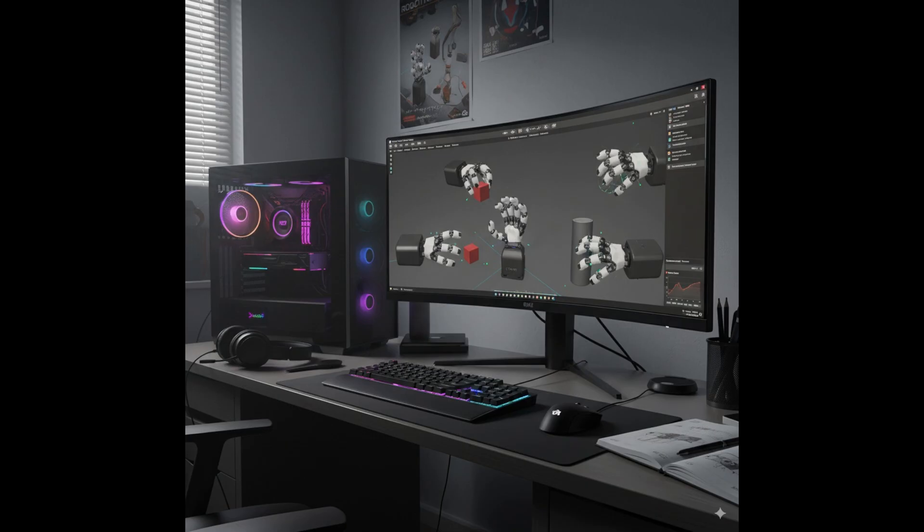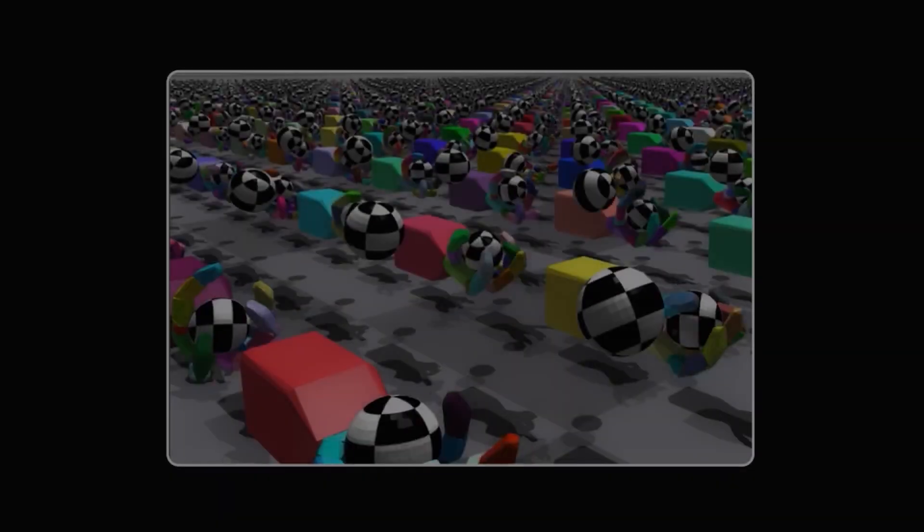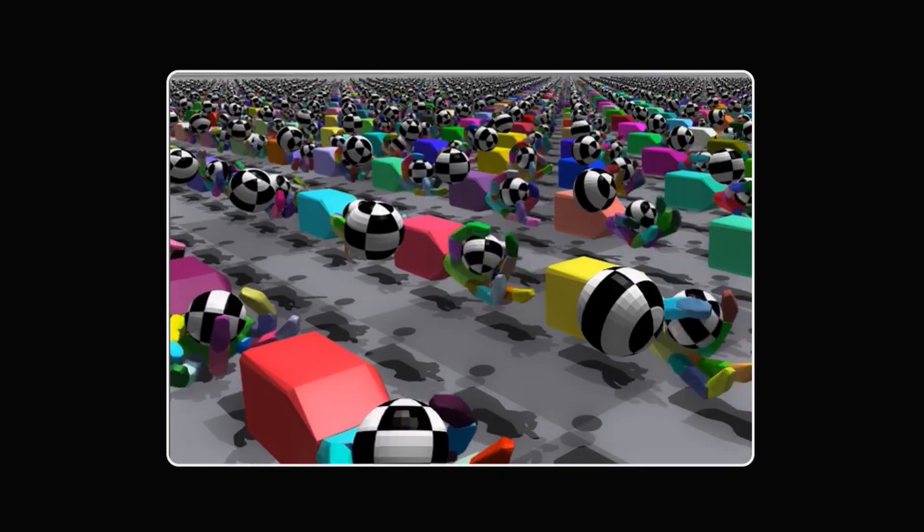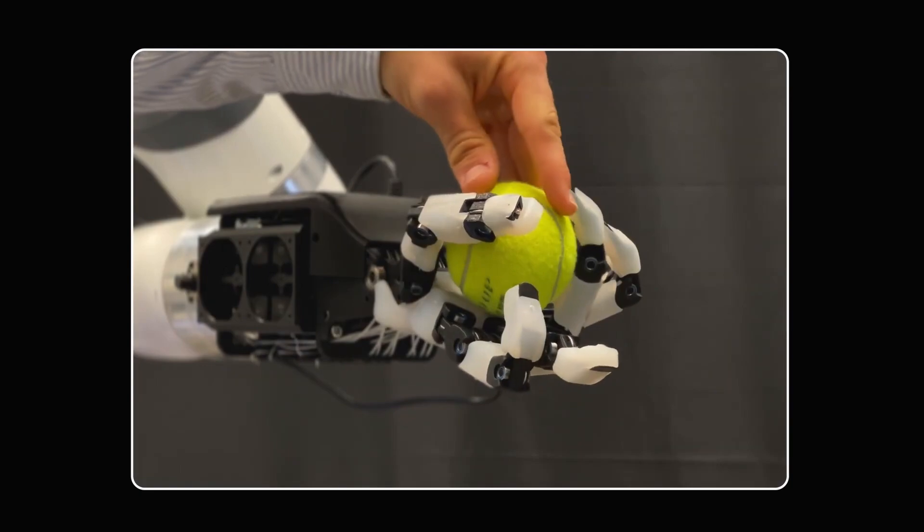The research team used the Isaac Gym Invis wrapper with an advantage actor-critic reinforcement learning architecture to train Orca hand to reorient a ball in its palm. The simulation training took only about one hour, and the learned policy transferred directly to the real hardware with zero tuning.